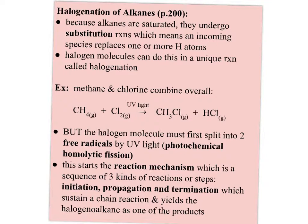This step starts the reaction mechanism, and it includes three kinds of reactions or steps. The first step is called initiation because you have to initiate or create some free radicals to get this process going. The second step is called propagation, where the free radicals continue to produce more free radicals and keep the process going. Then there's a termination step where the free radicals get eliminated — bonded back into stable molecules — thus terminating this chain reaction.